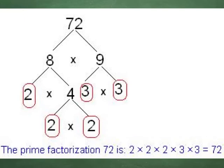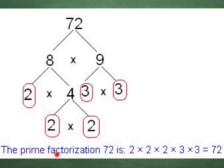Here is an example of a slightly larger number with more factors. 72 breaks down into 8 times 9. 8 is 2 times 4, and 9 is 3 times 3. 3 times 3 are both prime numbers, and the 2 is prime, but 4 is not prime — so it breaks down to 2 times 2. So the prime factorization of 72 is 2 times 2 times 2 times 3 times 3, and that equals 72.